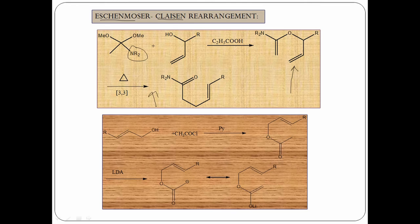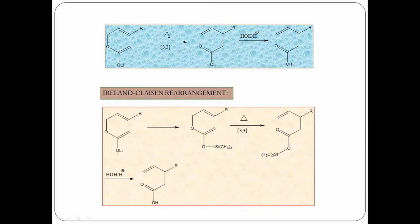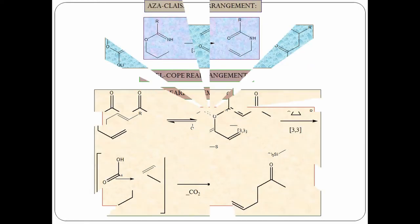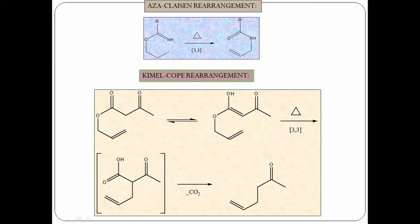In Ireland Claisen rearrangement, an allylic alcohol is treated with acetyl chloride and pyridine so that O-acylation takes place. Treatment with LDA generates an anion, which exists in resonance form. This compound is then subjected to Cope or Claisen rearrangement conditions to give alpha-beta, gamma-delta unsaturated acids upon protonation. In Ireland Claisen, the anion is protected as a silyl ether, and the silyl ether is subjected to Claisen conditions to give gamma-beta unsaturated acids.